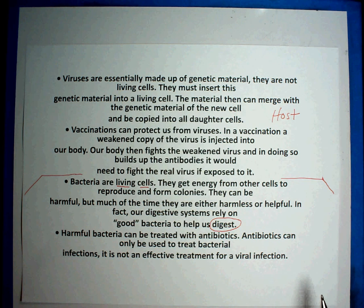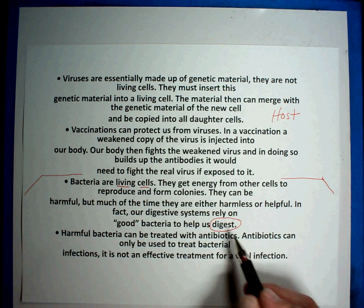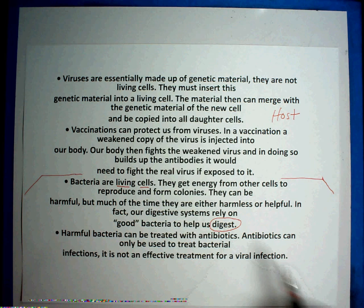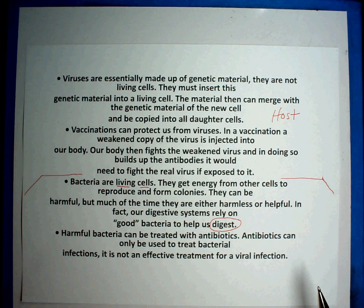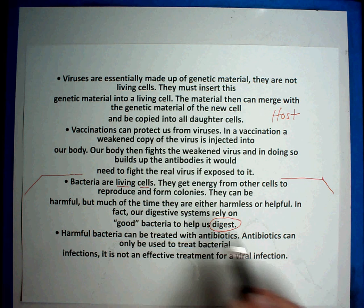In our intestines, we have bacteria that live there that help us digest our foods. They're very important as the last means of getting all the vitamins and nutrition out of our food. Animals have the same thing. Cattle have good bacteria that live in their digestive system as well. So bacteria can be good. They could also be bad.